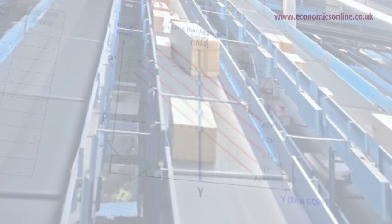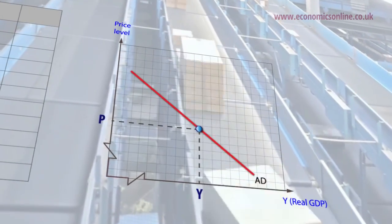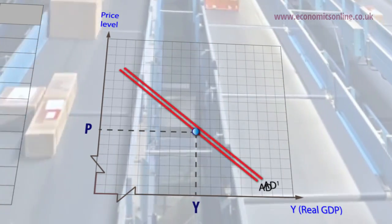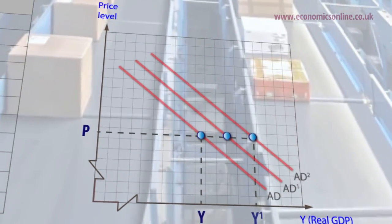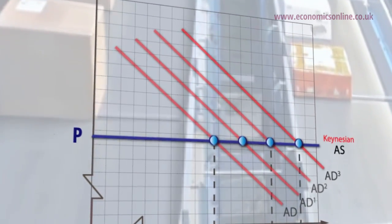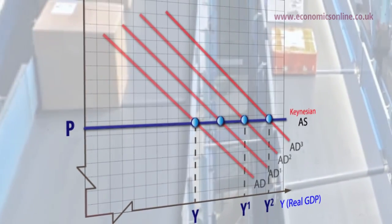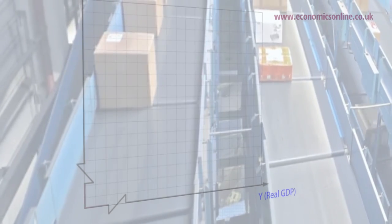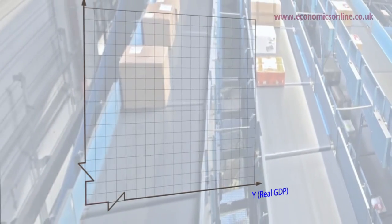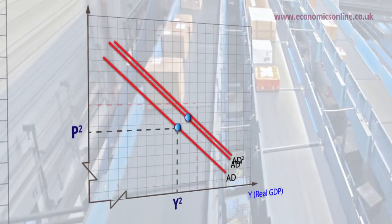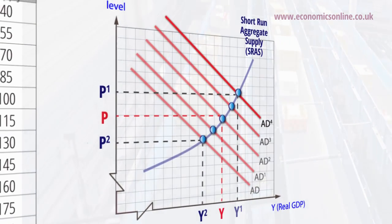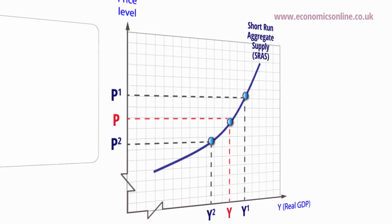In contrast, Keynesian economists assumed that supply could adjust to demand, and the only factor determining the level of output and employment would be the position of the AD curve, hence the AS curve is horizontal. To solve this dilemma, modern economists differentiate the short-run AS curve, called SRAS, and the long-run AS curve, called LRAS, and also accept that in the short-run, SRAS is upward sloping.